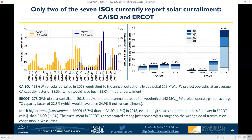Speaking of curtailment, these two graphs show the history of solar curtailment in both California and Texas — the only two independent system operators, or ISOs, that currently report solar curtailment data. The graph on the left shows the monthly profile of curtailment: solar curtailment tends to peak during the spring and fall shoulder months when load tends to be relatively light but the solar resource is still strong. The graph on the right shows the annual history of curtailment. It's crept up steadily in California along with increasing solar penetration rates. ERCOT has a much lower solar penetration rate than California but experienced a much greater percentage of curtailment in 2017 and 2018, due to some local congestion in West Texas impacting just a few projects.